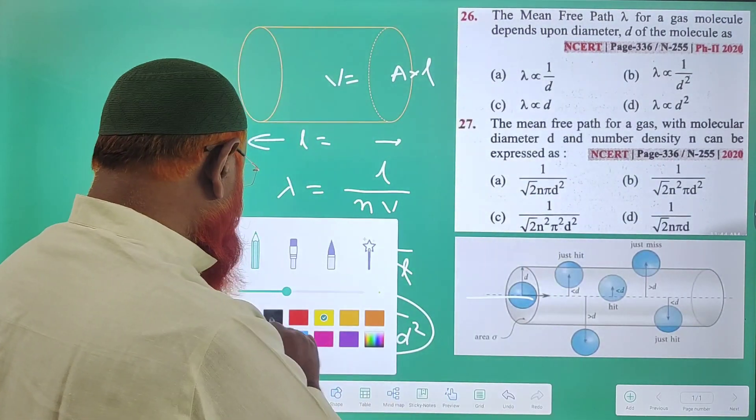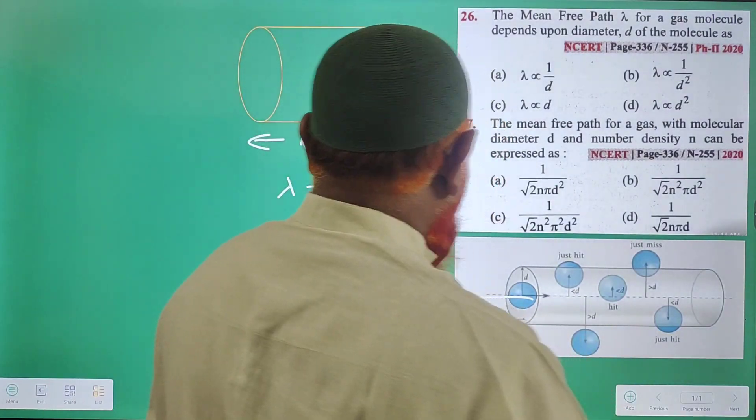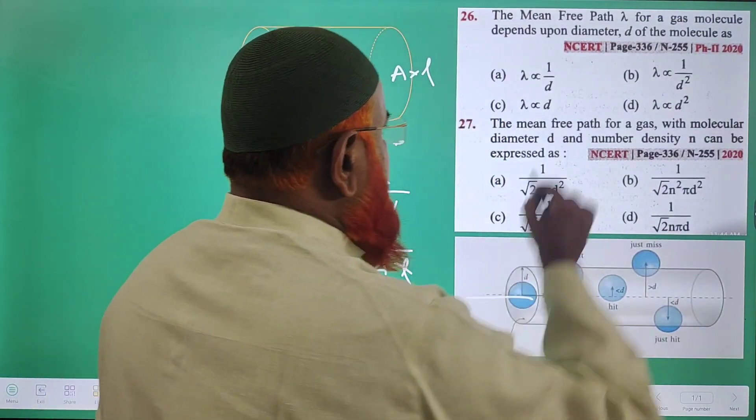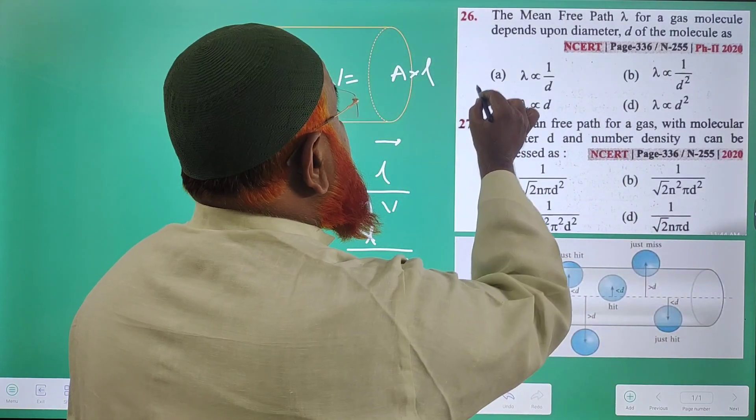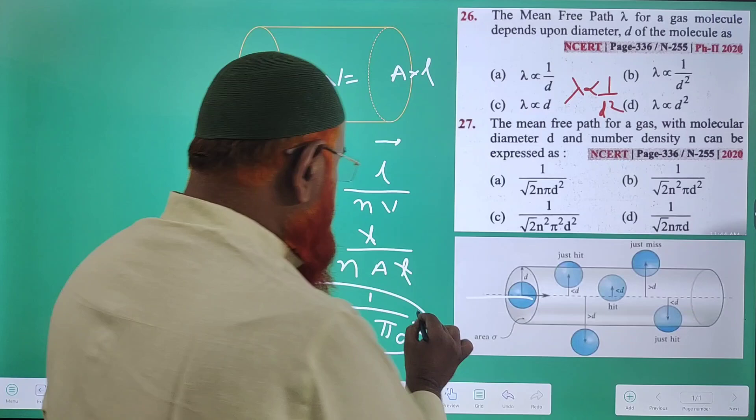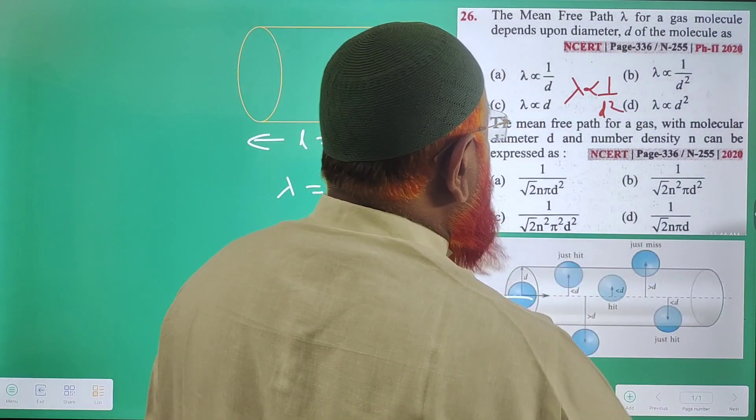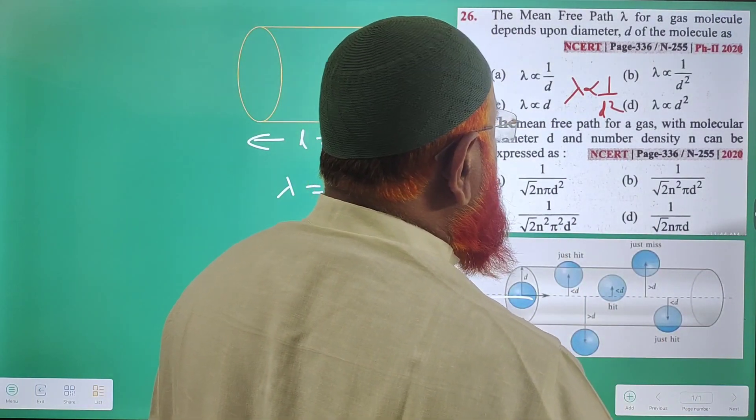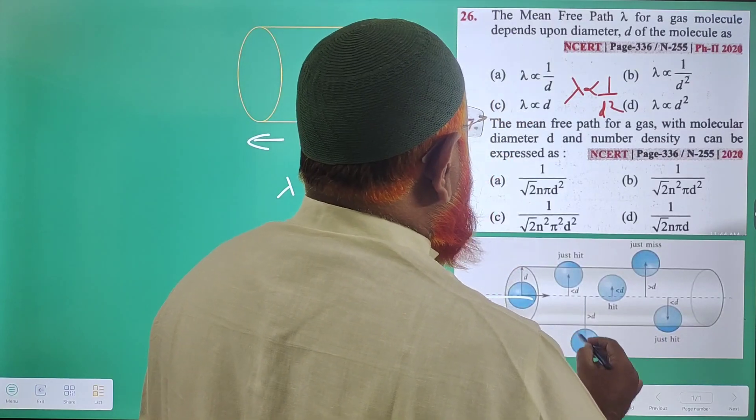You can tell the answer very easily. Here, mean free path is inversely proportional to D squared, and the mean free path formula is also known to you.